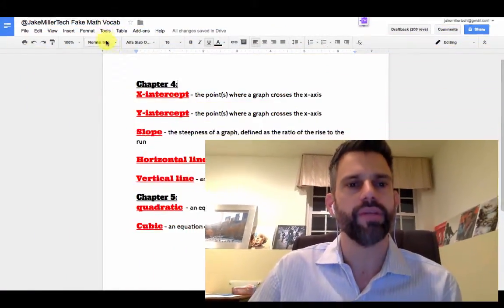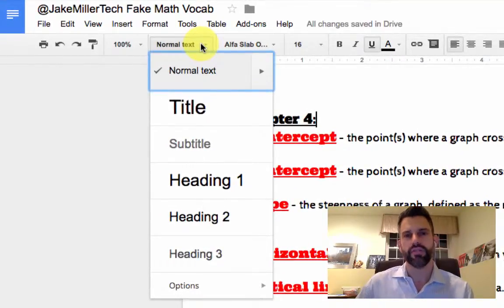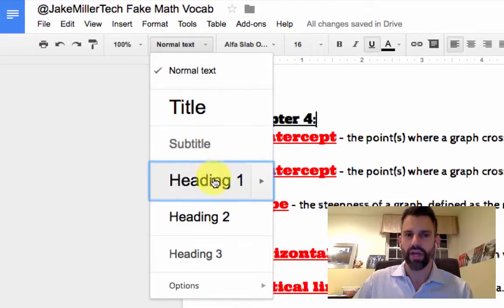So up here you probably see normal text along the top of your screen, and if you click that drop-down you notice that there are six total different styles here: normal text, title, subtitle, heading one, two, and three.